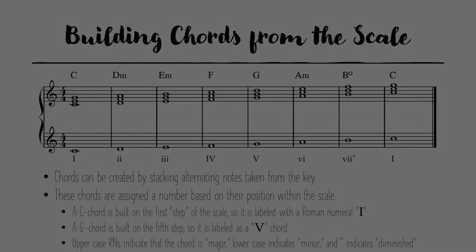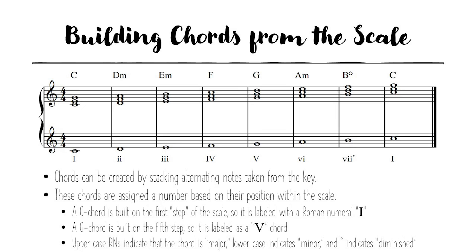Once you have your scale you can begin creating chords built off of the notes of that scale. Chords — specifically these basic types of chords called triads — can be created by stacking alternating notes taken from the key. So this first chord in the example here is a C major chord because it takes the notes C, E, and G.